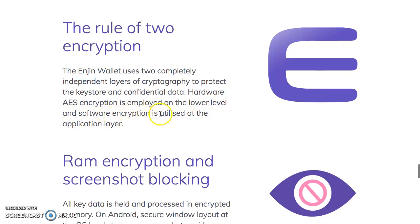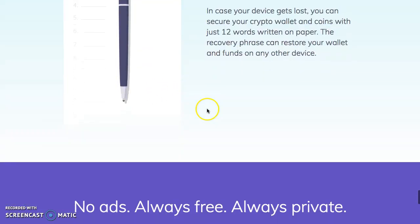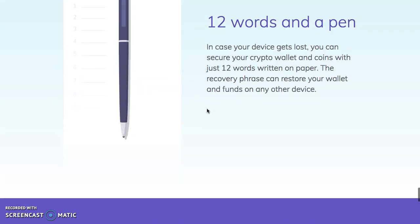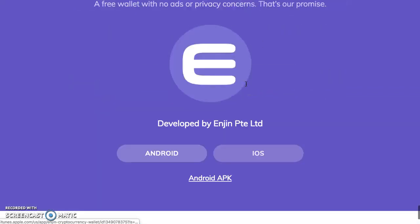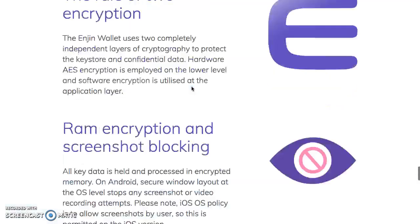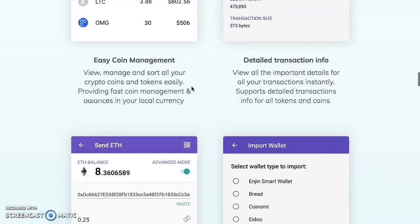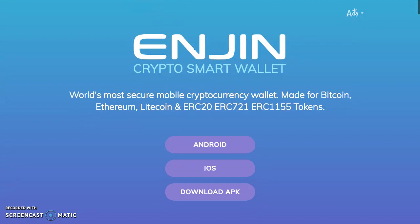Hardware AES encryption — I believe NASA, the government, and banks use that — is employed at a lower level, and software encryption is utilized at the application layer. Twelve words in the PIN. If you are new to the space, make sure you get a book or journal and write down your password and seed words. No ads, always free, always private. Whenever you have a wallet, write it down — don't take a picture. Write it down in your book.